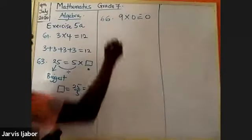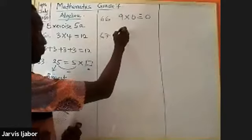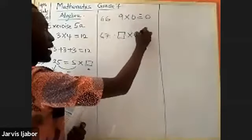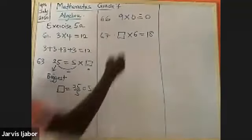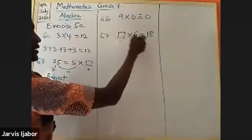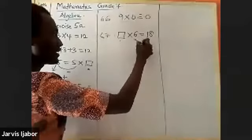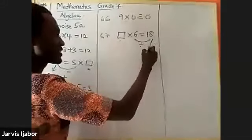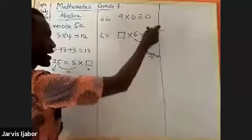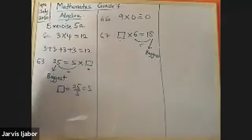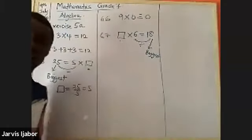Question sixty-seven: box times a certain number equals eighteen. Irrespective of where the box is located, you are still going to divide, because eighteen is the biggest. So it is division — biggest divided by the other number.